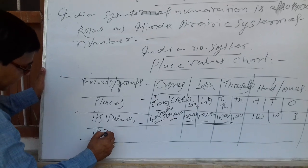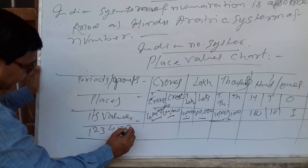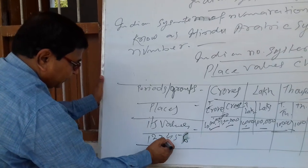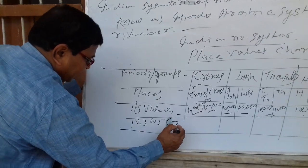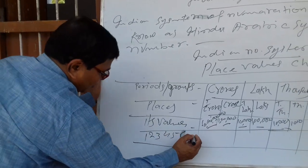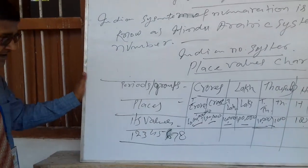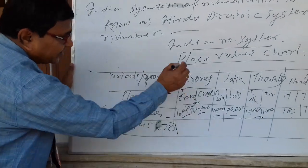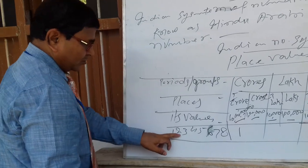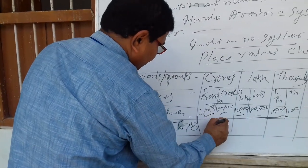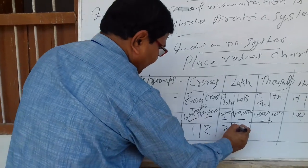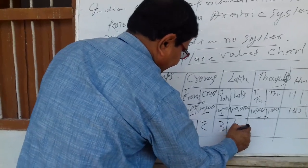Number one, two, three, four, five, six — six places. Seven: one, ten, hundred, thousand, ten thousand, lakh, ten lakh, crores. As it's split into periods and places — one, two, three crore, ten lakh, and four lakhs.